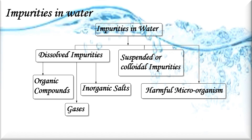The following impurities are commonly found in water. The first is dissolved impurities, which include organic compounds, inorganic salts, and gases. In inorganic salts, these include bicarbonates, chlorides, nitrates, and sulfates of sodium, magnesium, potassium, and calcium. In organic impurities, they are generally soluble organic compounds obtained from domestic sewage, industrial waste, or the decay of dead animals or plants.